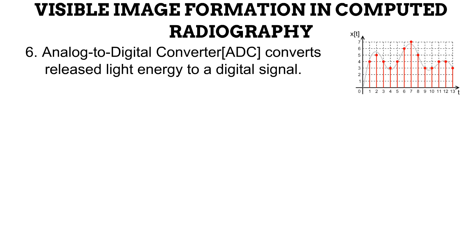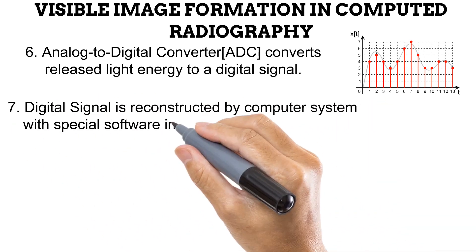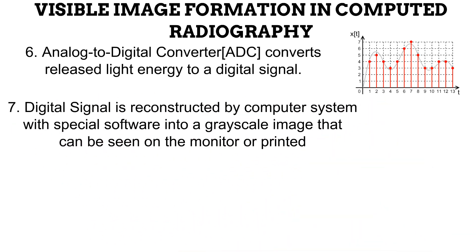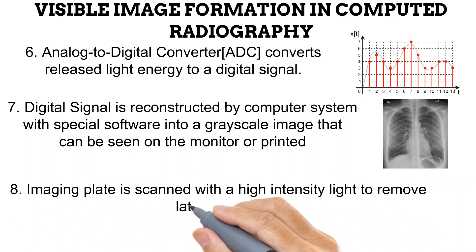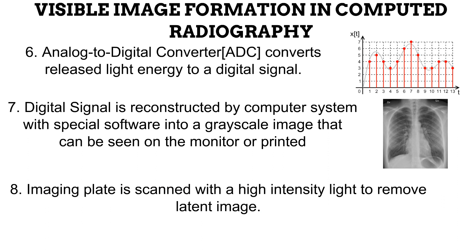However, the digital signal cannot be appreciated in a clinical manner — it seemingly makes no sense. Thus, the digital signal is converted to a form that can be appreciated clinically, done by reconstruction into a grayscale image that can be appreciated on a monitor or printed out. Finally, the imaging plate is scanned with a high-intensity light to remove the latent image and allow the imaging plate to be reused for another round of image acquisition. This concludes the process of visible image formation in computed radiography.